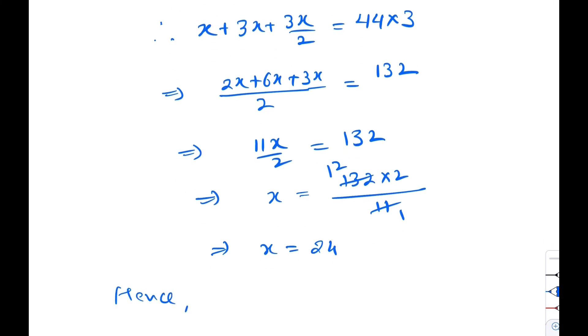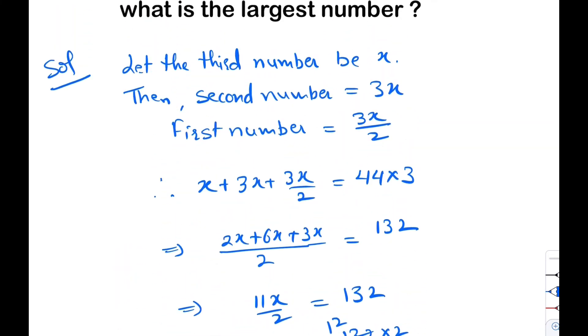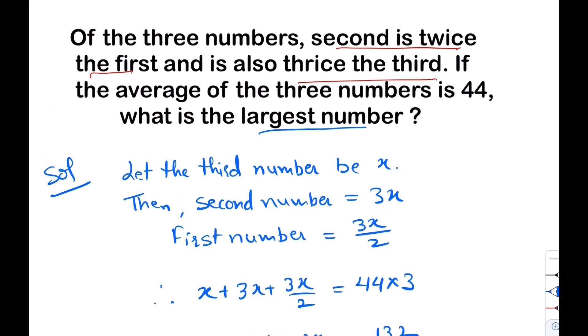Hence largest number is 3x, means 3 into 24, so this is equal to 72. So our answer is 72. Largest number is equal to 72. This is our answer.